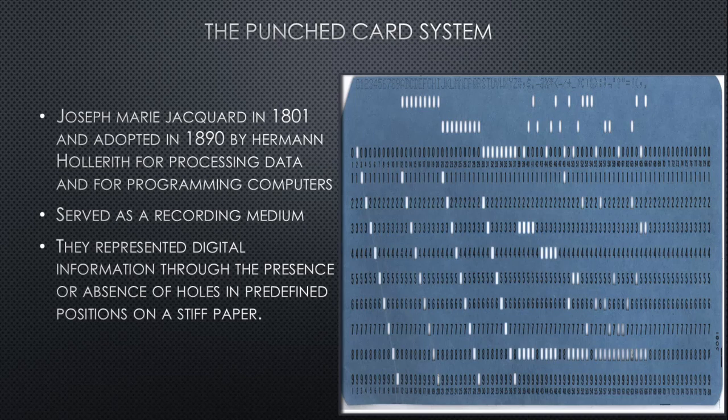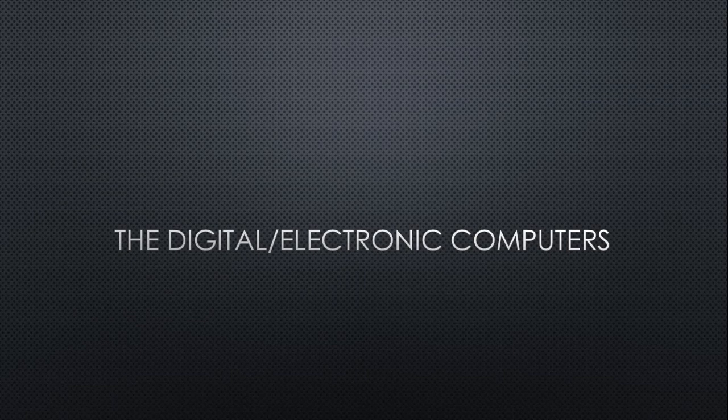The punch card system served as a recording medium, making it part of the history of computer storage. Punch cards represented digital information through the presence or absence of holes in predefined positions on a stiff paper material. If there is a hole, there is an absence of data; if there is no hole, there is data.